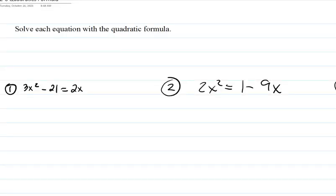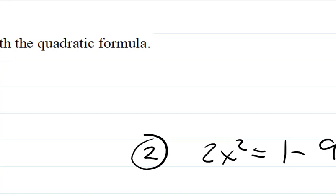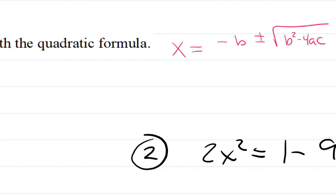We've got to know what the quadratic formula is, and this thing's long. It's really, really a doozy. So make sure you write the quadratic formula down if you don't already have it memorized. x equals negative b plus or minus the square root of b squared minus 4ac, all over 2a.